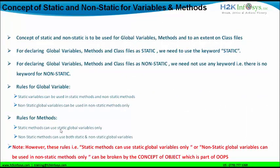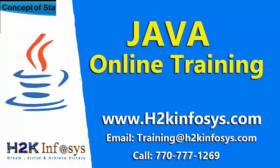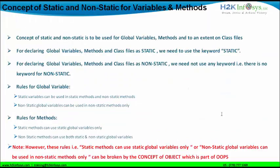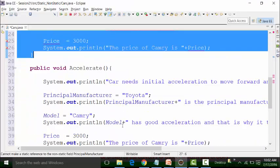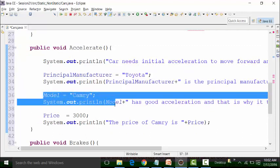Similarly, static methods can use static global variables only. If I try to use a non-static global variable like principal manufacturer and price inside a static method, the compiler shows a problem. Non-static methods can use both static and non-static global variables — that is what we have seen. Non-static methods like accelerate can use non-static global variables as well as static global variables. That is what this session is about — to discuss these rules.